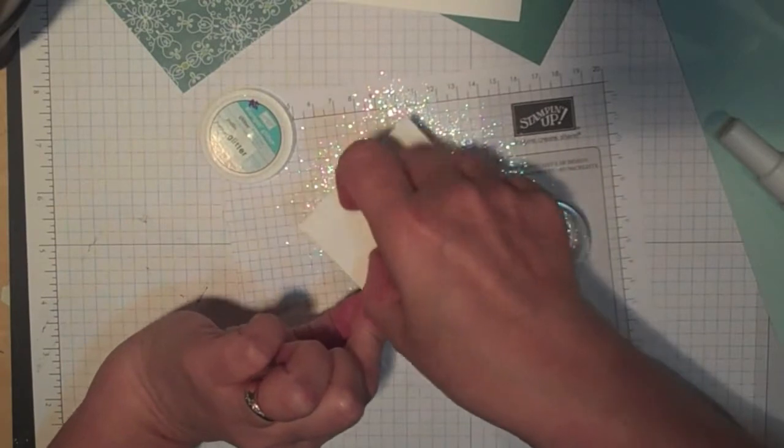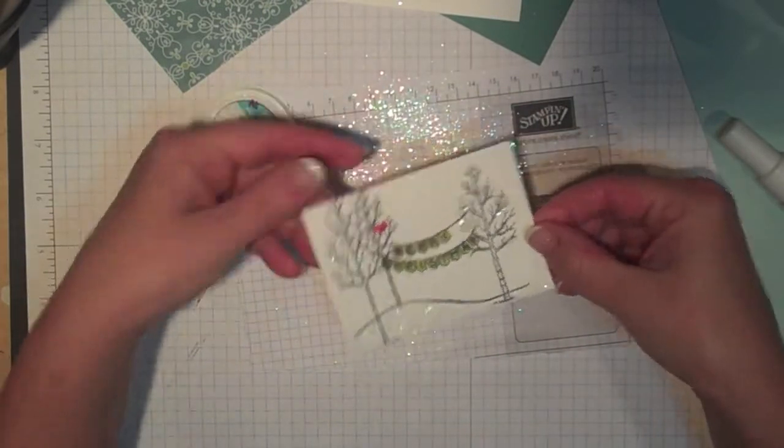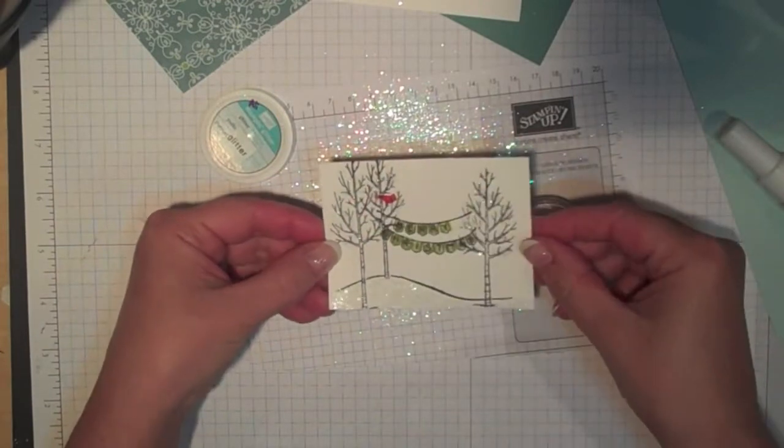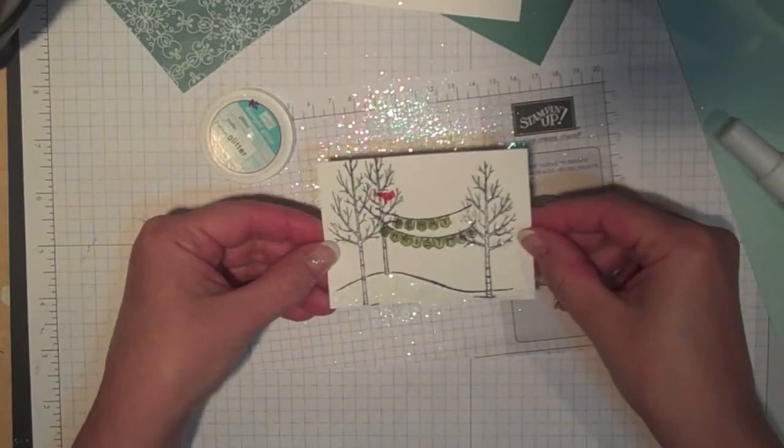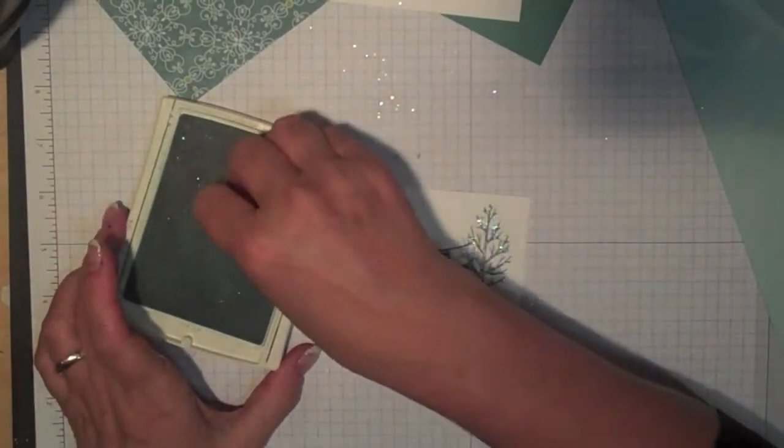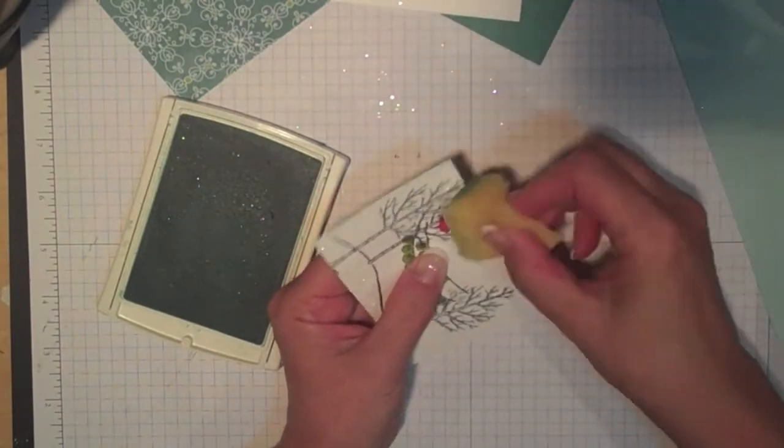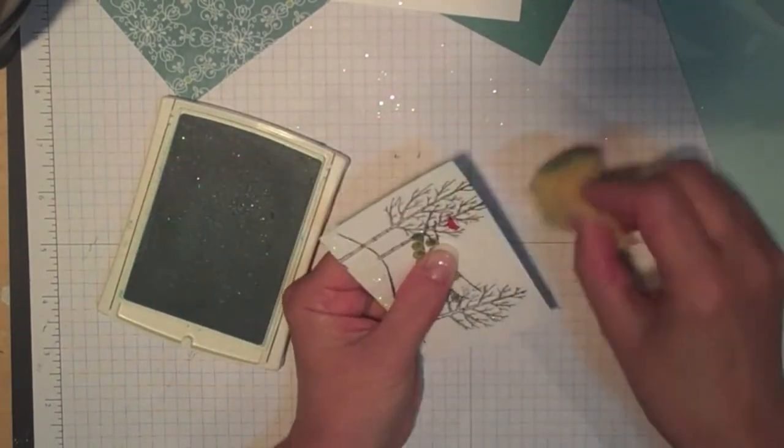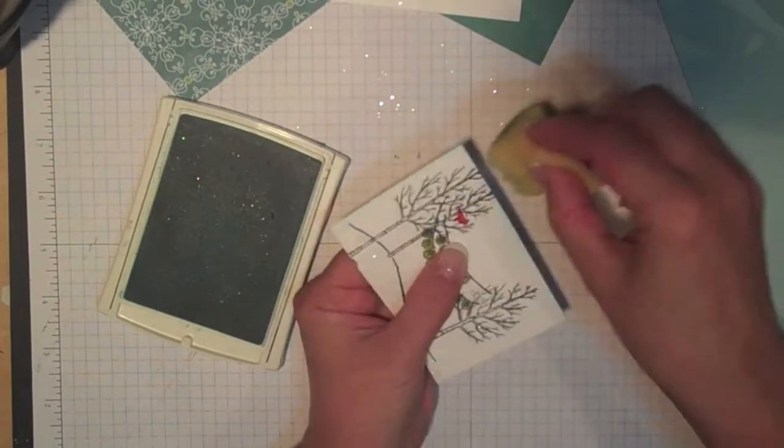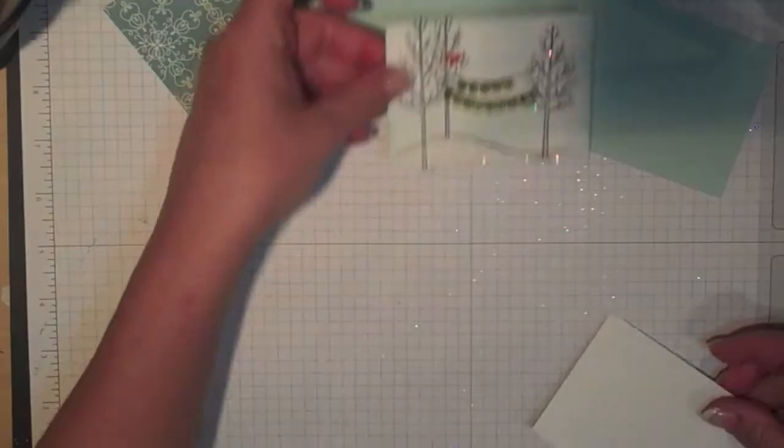And then just turn it and give it a little flick, and the glitter only sticks where you've had that two-way glue, which is really cool. I want to just add a little bit of interest where the sky would be, so I'm going to take a sponge and Soft Sky ink and I'm just going to go around all the edges and I want it to come just a little bit in onto the card.